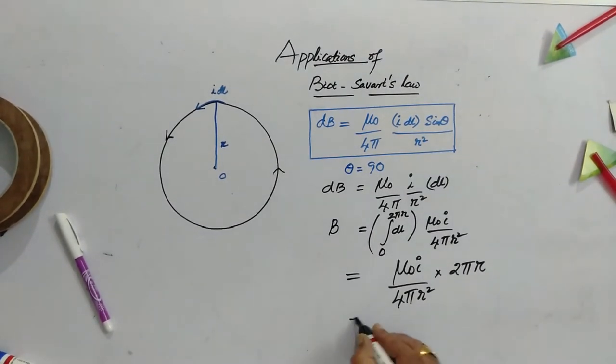Now, the final result B is equal to mu 0 i by 2 r by cancelling this pi to 2 r and 1 r is cancelled. So, this is our final result.